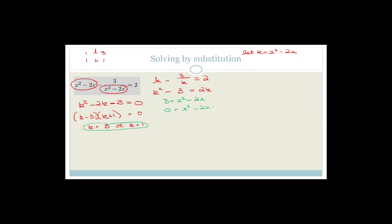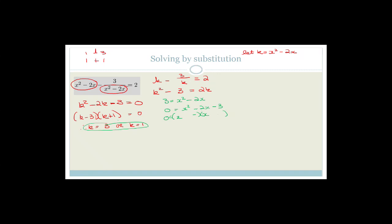Therefore 0 equals x squared minus 2x minus 3. We factorize: the factors of x squared are x and x, and it's going to be a minus and a plus — minus 3 and plus 1. So x equals 3 or x equals negative 1. We haven't finished yet because we still have to let k equal negative 1 and solve for x.